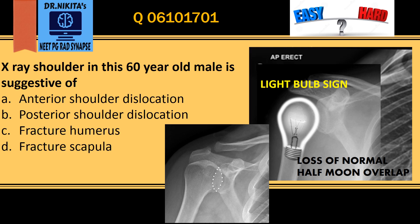We get this light bulb sign because of the internal rotation of the humerus head in posterior dislocation. So the correct answer is option B, that is posterior shoulder dislocation.